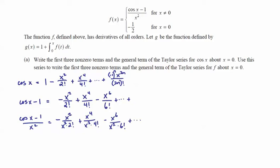Which, being simplified, will be negative 1 over 2 factorial, which is negative 1 half plus x squared over 4 factorial minus x to the 4th over 6 factorial. And that is our expression.